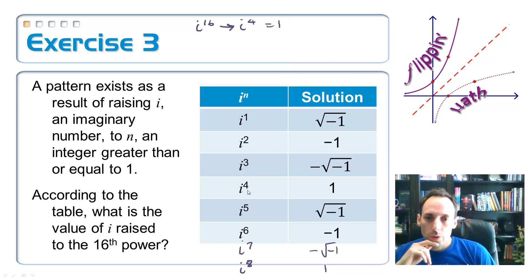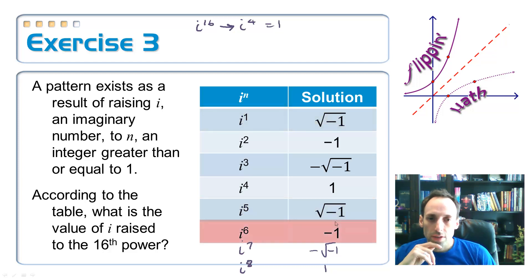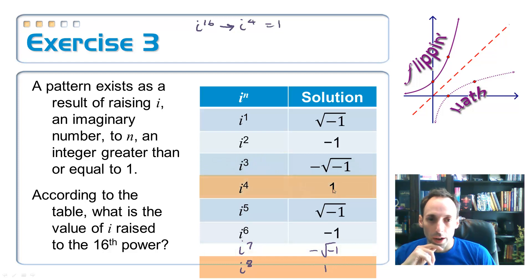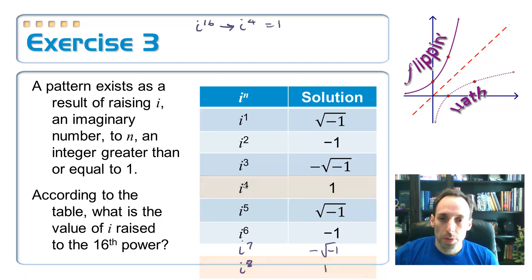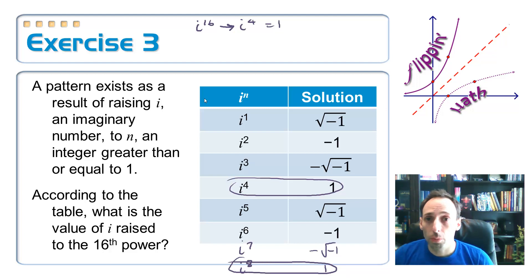Notice that the powers of i just keep repeating. i to the 4th is the last one before it repeats, and i to the 5th is the square root of negative 1, which is the same as i to the 1st. After i to the 5th it just repeats again. So every multiple of 4 is going to equal 1. Since 16 is a multiple of 4, i to the 16th equals 1.